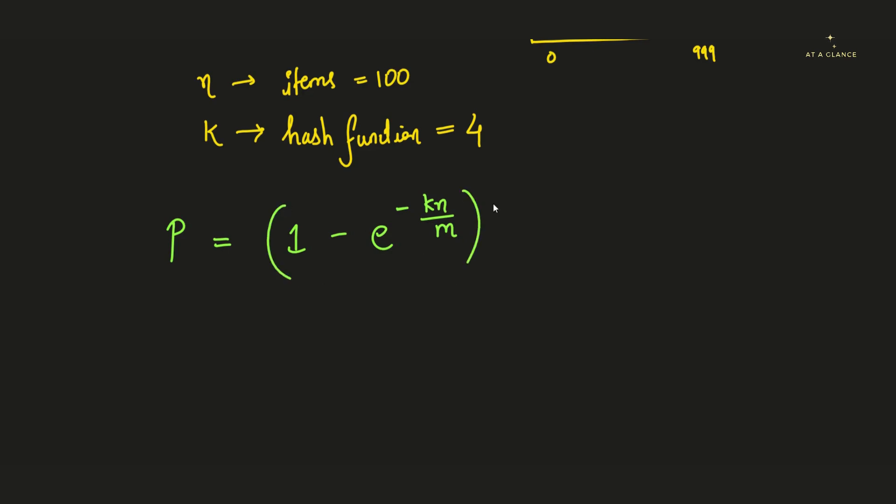Now inside this, we have already seen the significance of each and every parameter that are involved here. k is the total number of hash functions, n is the total number of items that are going to be fed into the Bloom filter, and m is the total number of cells that are present inside the Bloom filter. Now we have all these values, we just have to put this into this particular equation and we'll get the answer.